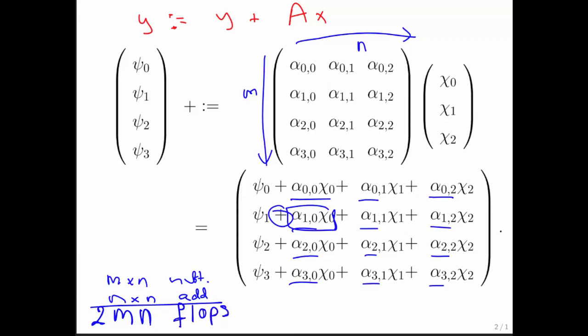If anybody asks you, what does a matrix vector multiply cost? If you have not been given any information that this matrix is special, and we'll look at some special matrices next week, then what you should remember is a multiply and an add for each entry in A. There are m times n entries in A, and therefore the total must be 2m times n floating point operations.